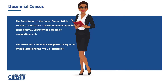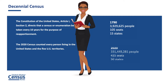The data collected by the decennial census are used to determine the number of seats each state has in the U.S. House of Representatives. The population in 1790 was 3,929,625, and Congress used these results to apportion 105 seats among 15 states. According to the results of the 2020 census, there were 331,449,281 people living in the United States as of April 1st, 2020, and 435 seats to apportion among 50 states.